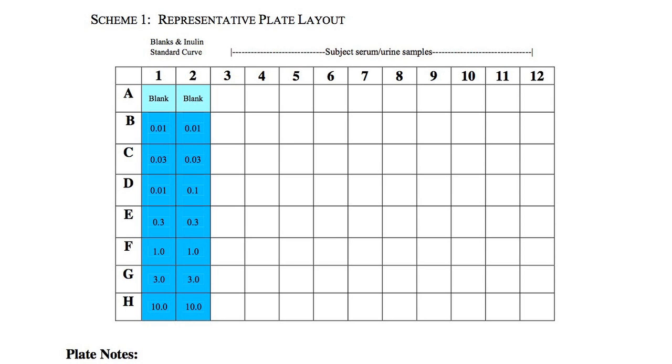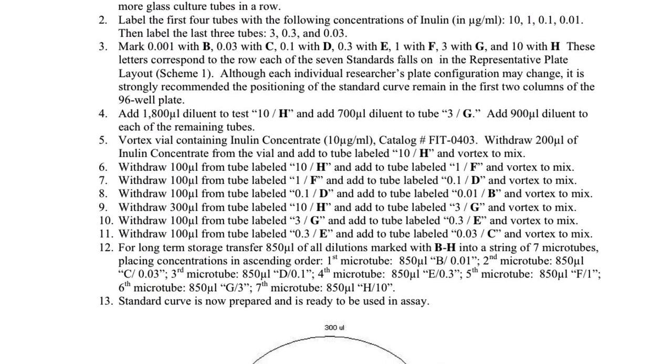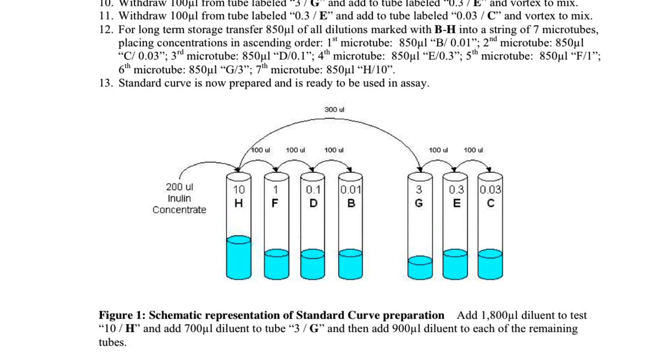In the middle of the page are inputs to record the lot number for each component of the kit. The third page provides a schematic of the plate wherein you can document the placement of each sample. The fourth page provides a detailed description of the procedure to generate the standards for the assay.